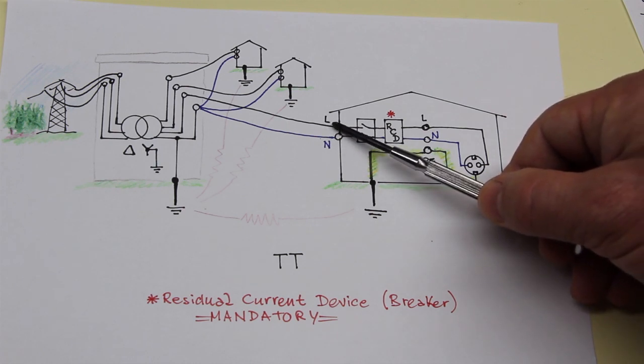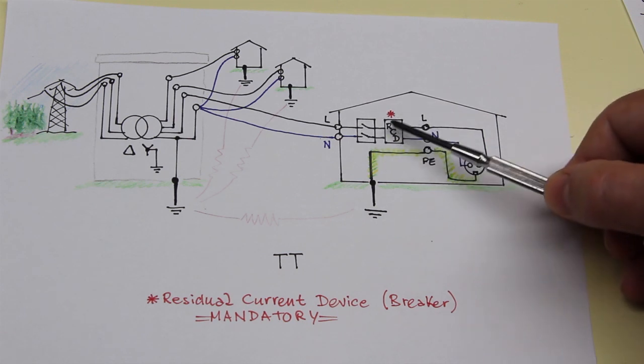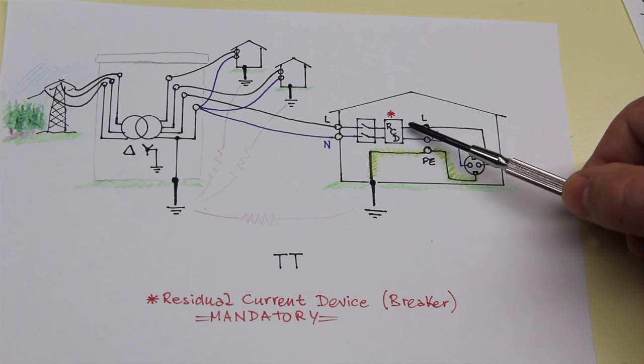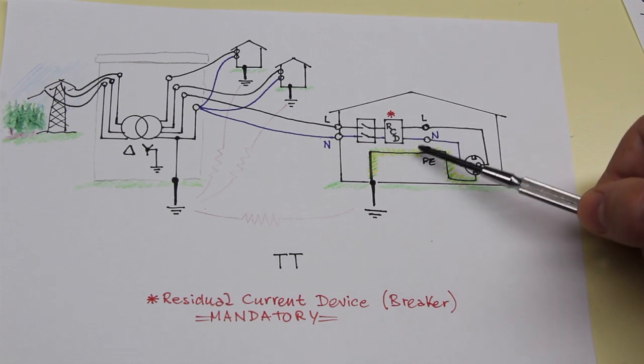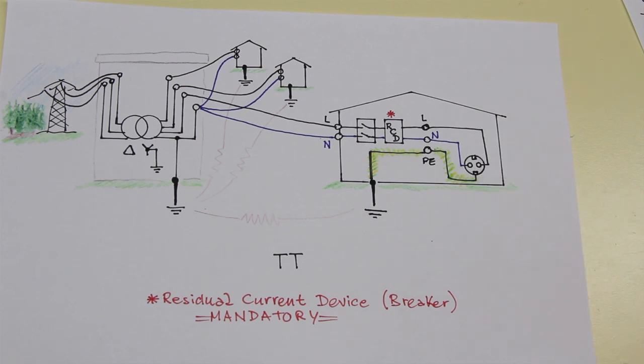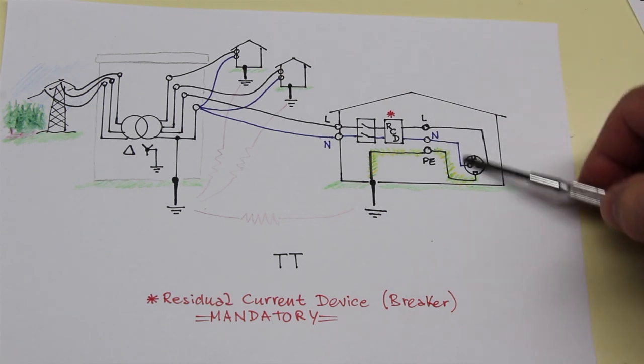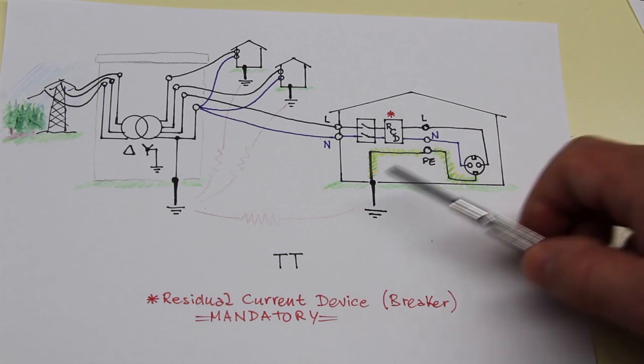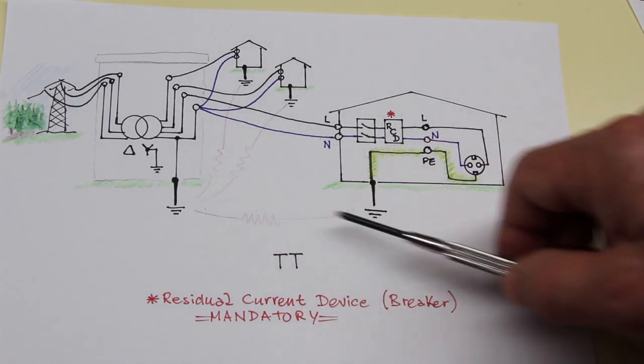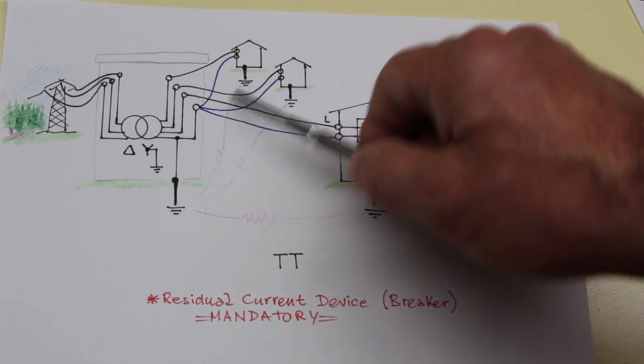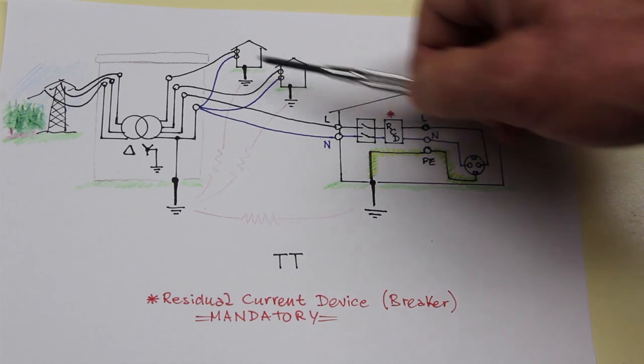So we have here a specific path to earth at the consumer side, and the live and neutral enter into the breaker, the main breaker, and then to the residual current device breaker that is mandatory. From here the live goes to the outlet, as you can see here. So we have the live, the neutral, and the protective earth that is separated from the neutral.